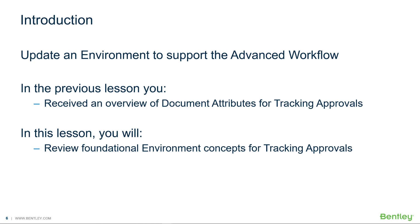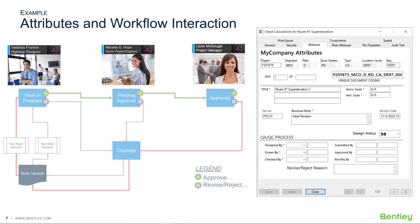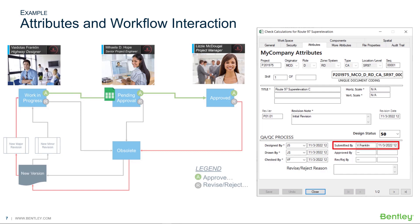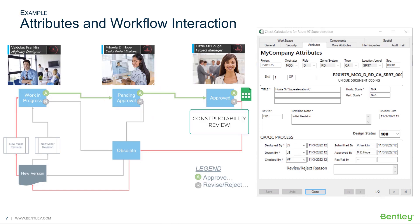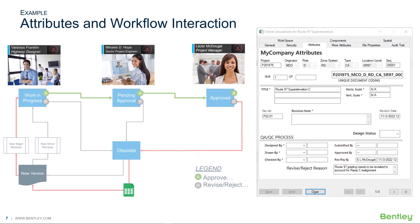In the previous lesson we got an overview of how document attributes can help track approvals. In this lesson we will learn the foundational concepts needed to support your knowledge about automated document attributes. As a document goes through the design review process, design review attributes are updated and cleared as needed. The process for work in progress to pending approval to approved can be repeated for each revision.